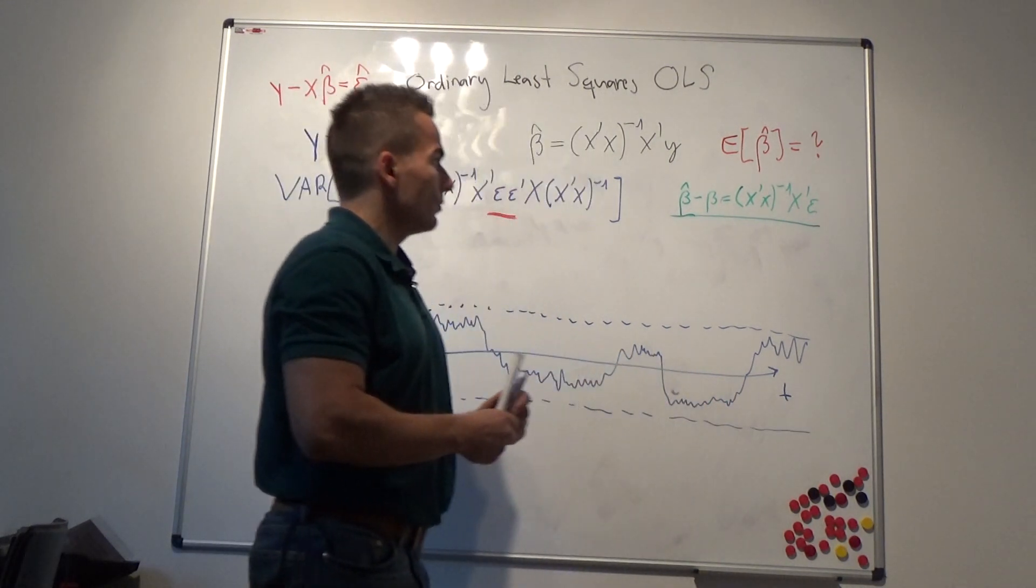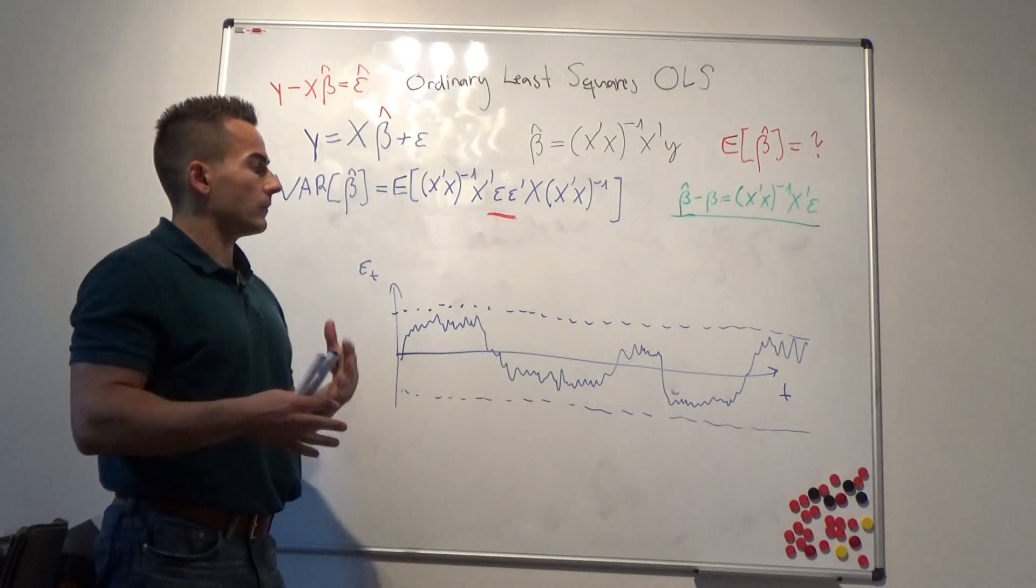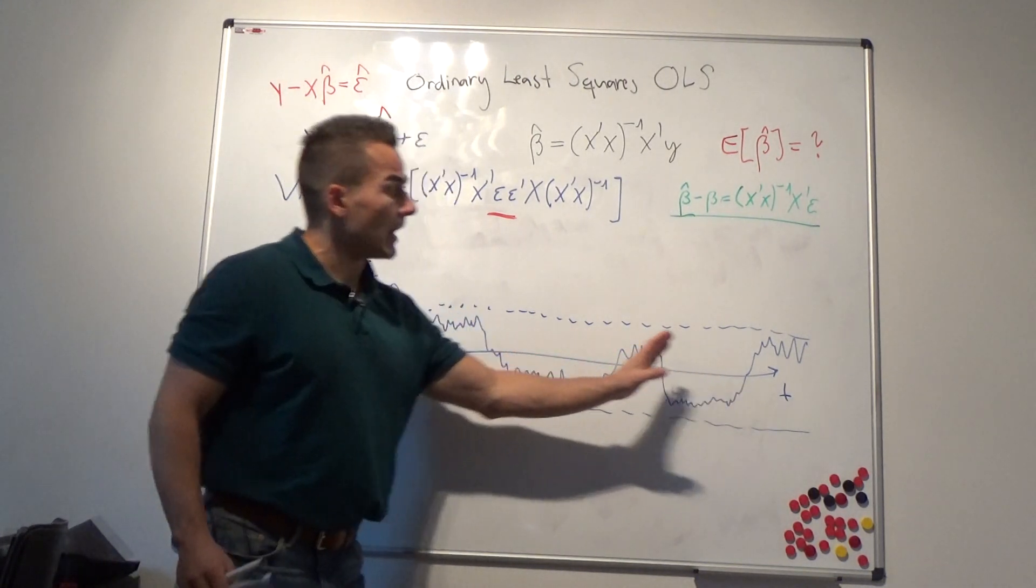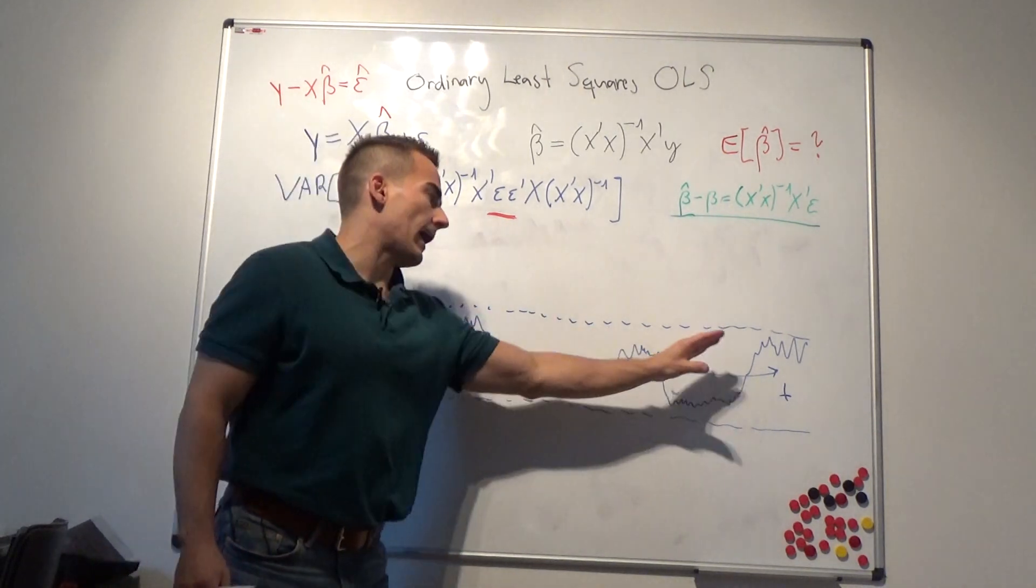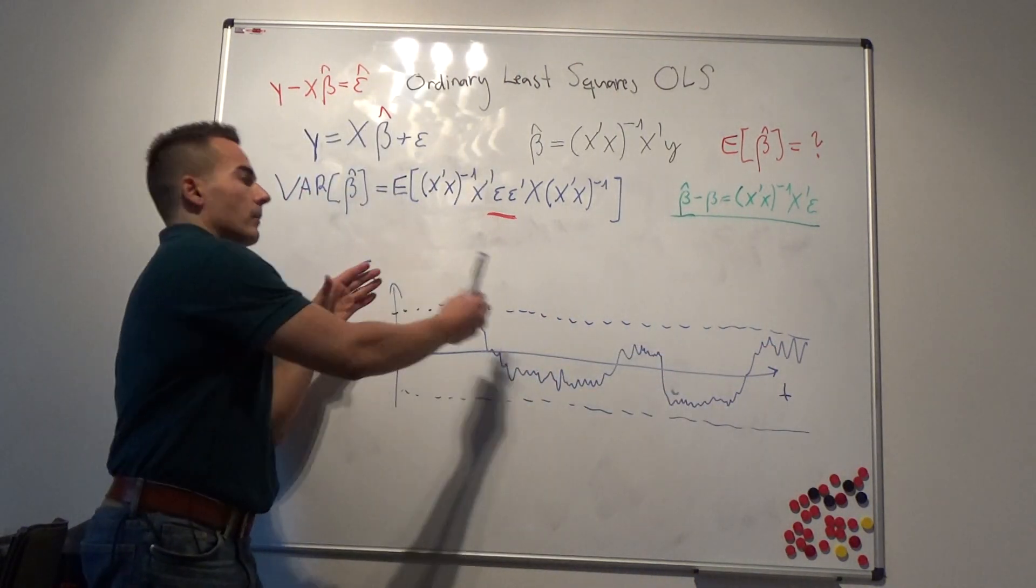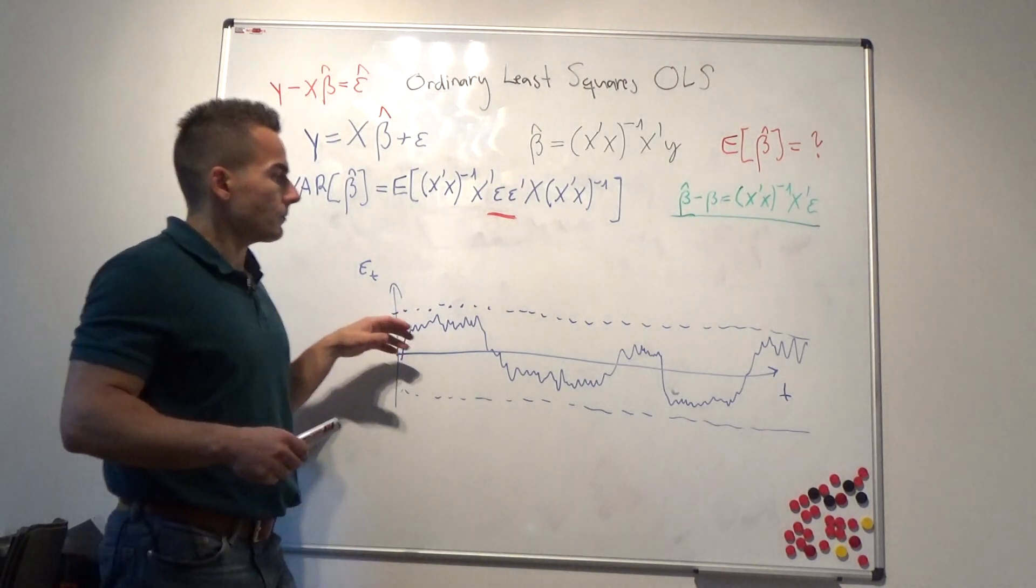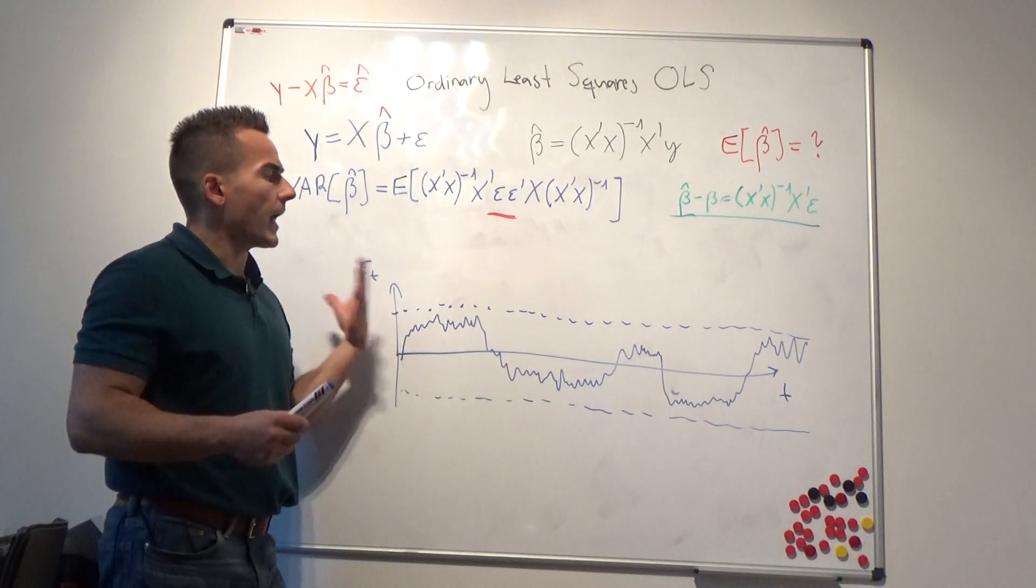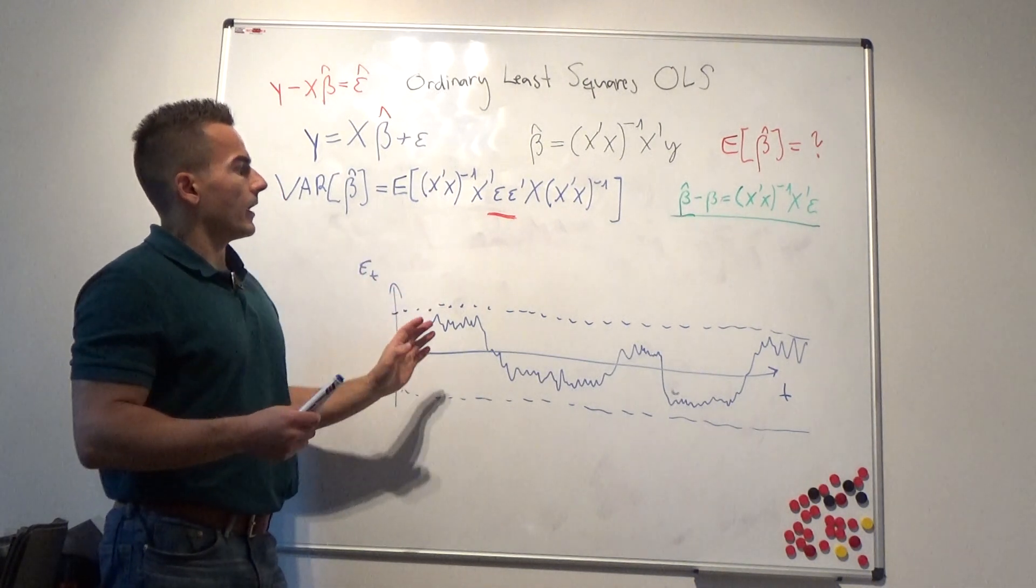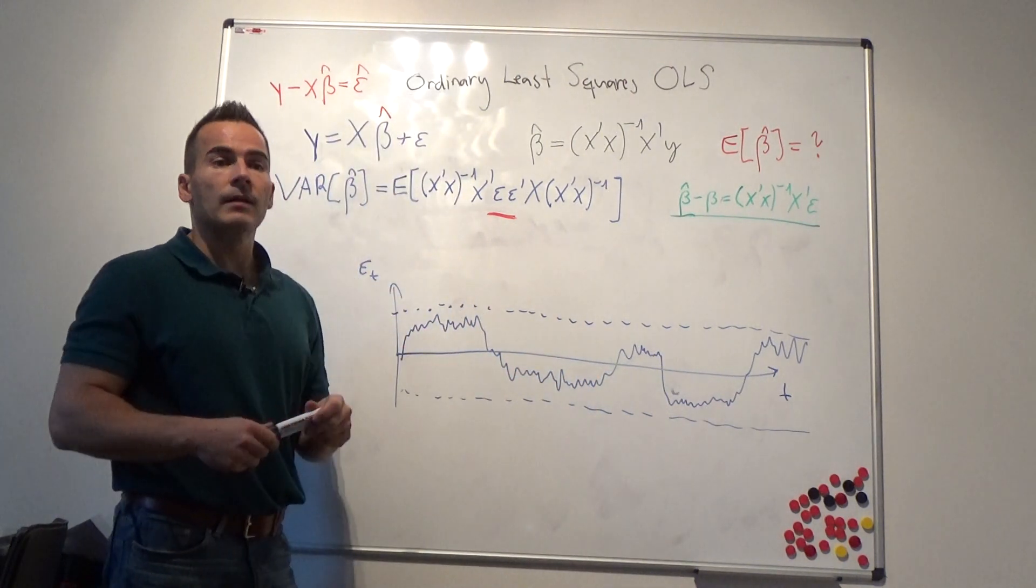And then what people do is basically they redefine the estimation procedure. People have shown that as long as the variance exists and it is finite and somehow converges in the very long term, then you can argue with the law of large numbers. We can basically proxy the variance, and as long as it exists—and that's now the important issue here.